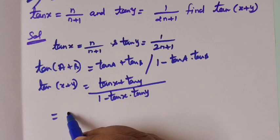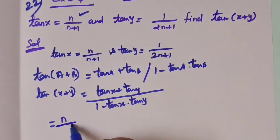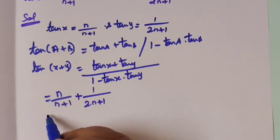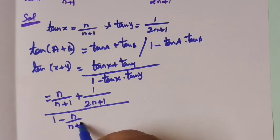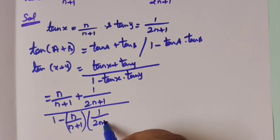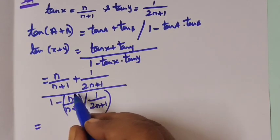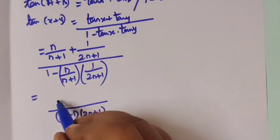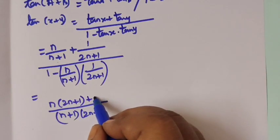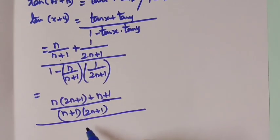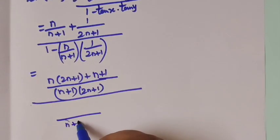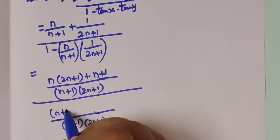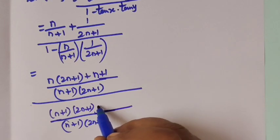Tan x has value n by n plus 1, so n by n plus 1, plus 1 by 2n plus 1, the whole divided by 1 minus n by n plus 1 times 1 by 2n plus 1. The LCM of the numerator is n plus 1 and 2n plus 1. Cross multiply: n bracket 2n plus 1 plus n plus 1, then the denominator with LCM n plus 1, 2n plus 1, cross multiply gives n plus 1 times 2n plus 1 minus n.